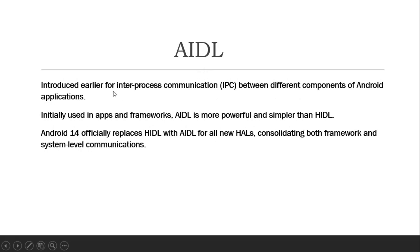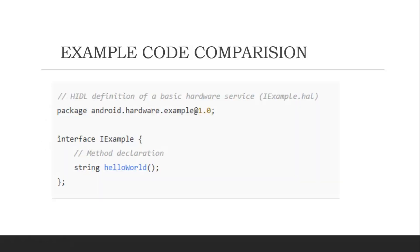To briefly recap AIDL: it was introduced very early on, from the beginning, for inter-process communication between different components of Android applications. Initially it was used in the application and framework layers. AIDL is more powerful and simpler compared to HIDL, and Android 14 officially replaces HIDL with AIDL for all new HALs, consolidating both framework-level and system-level communications. Now let's look at code comparison examples.